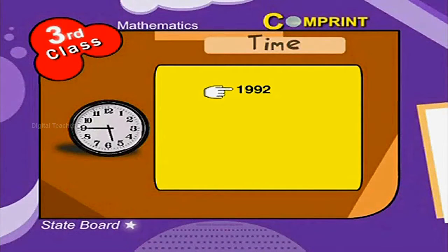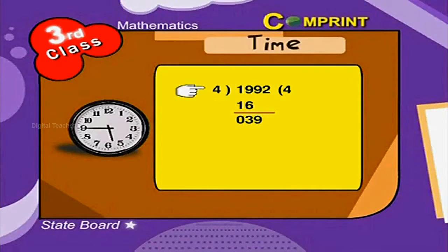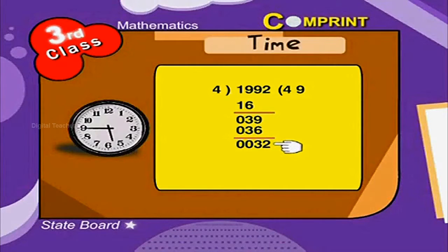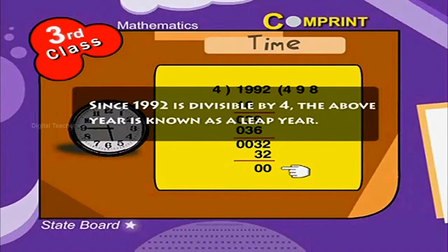First, divide 1992 by 4. 4 into 4 is 1, remainder 0. Bring down 9 — 4 into 9 is equal to 36, remainder 3. Bring down 2, giving 32. 4 into 8 is 32, so the remainder is 0. Since 1992 is divisible by 4, 1992 is a leap year.